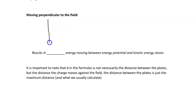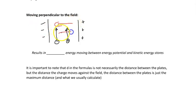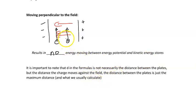What happens if we move perpendicular to the field? Keeping the mechanical analogy, if a positive or negative charge moves perpendicular to the field, it still has the same distance away from the positive or negative plate. As a result, there's going to be no energy moving between the potential and kinetic energy stores. Remember, the D in this formula is not necessarily the distance between the plates — it's the distance the charge is moving parallel to the field between the plates.